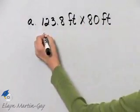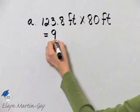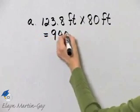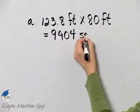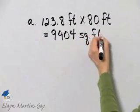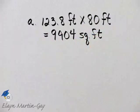I'll let you multiply, but once you multiply, you'll have 9,904 and that is square feet. That is the area of her lawn.